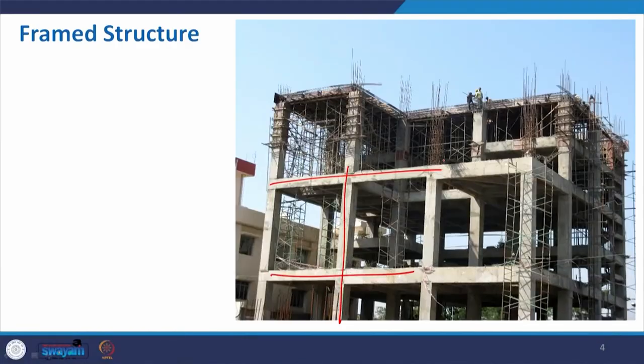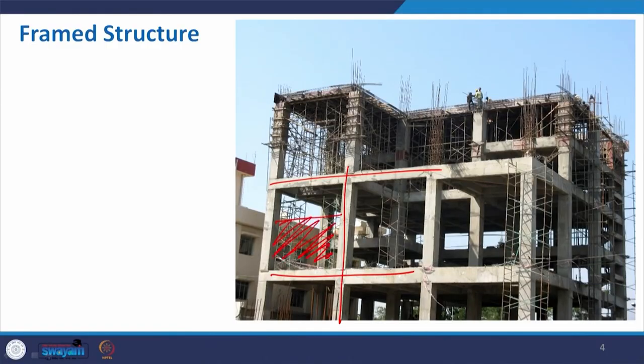Essentially all the load will be taken care of by this beam and column structure — the load of the slab and other furniture, moving elements — dead and live loads both will be taken care of. In order to create partition and function, we can also use the wall at a later stage. As this wall will not carry any load, we can reduce the thickness of the wall. In load bearing structure the wall thickness is one and a half brick or maybe even up to 1 meter — more than 3 feet thickness — and that also has the limitation of going up to 4 or 5 storeys.